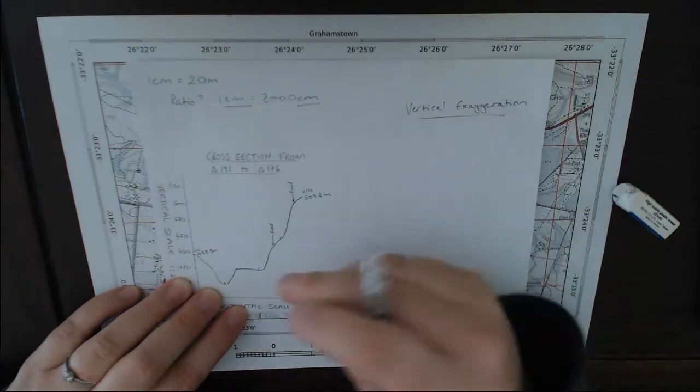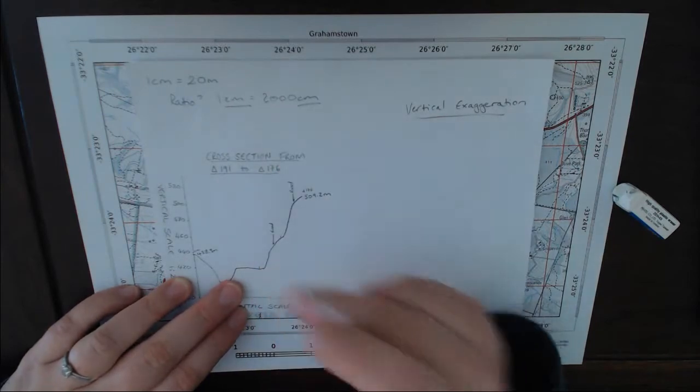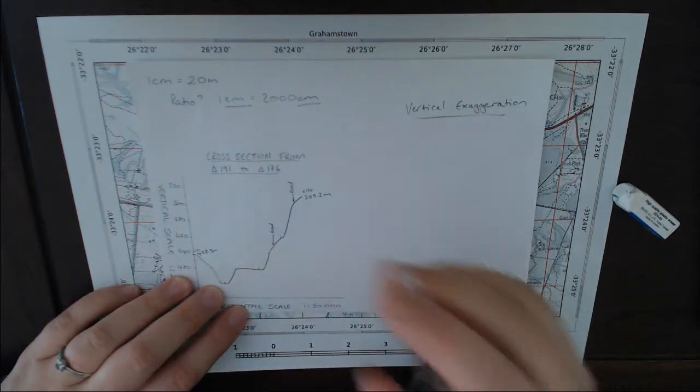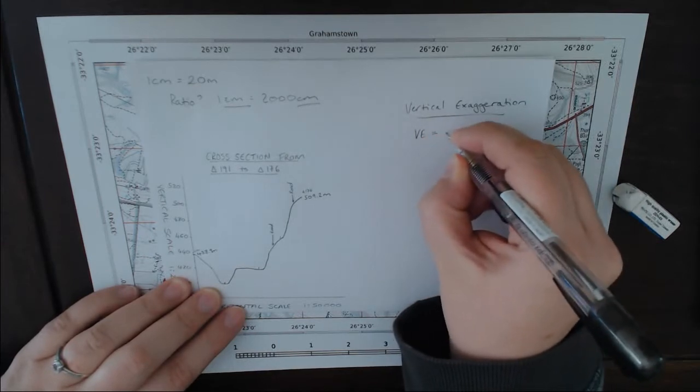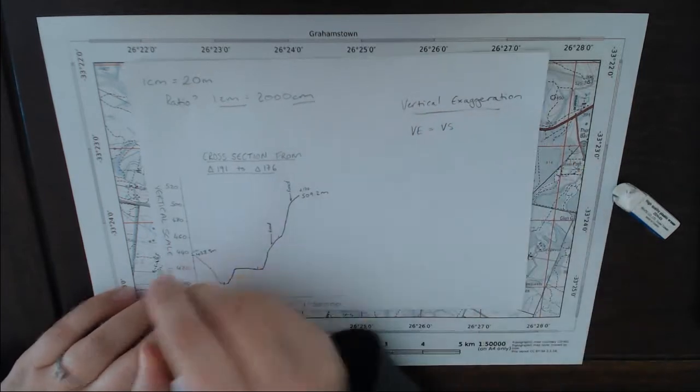Here is a cross-section that I made in the cross-sections video and we are going to calculate the vertical exaggeration because we know that our cross-section is stretched up, stretched out.